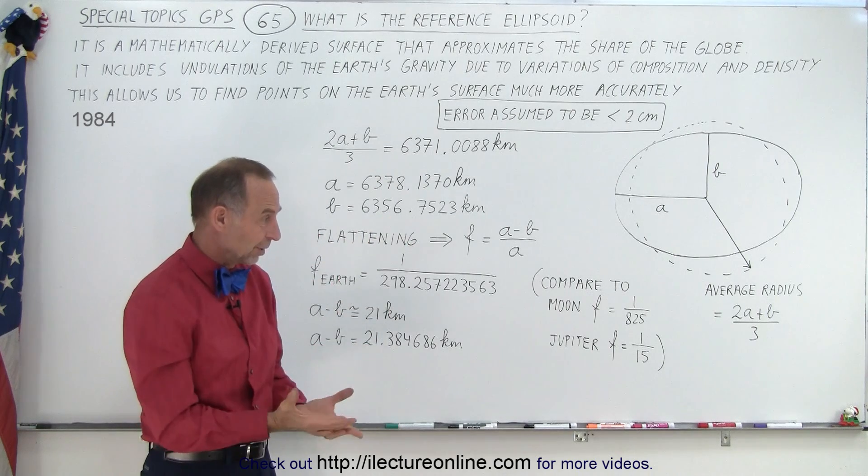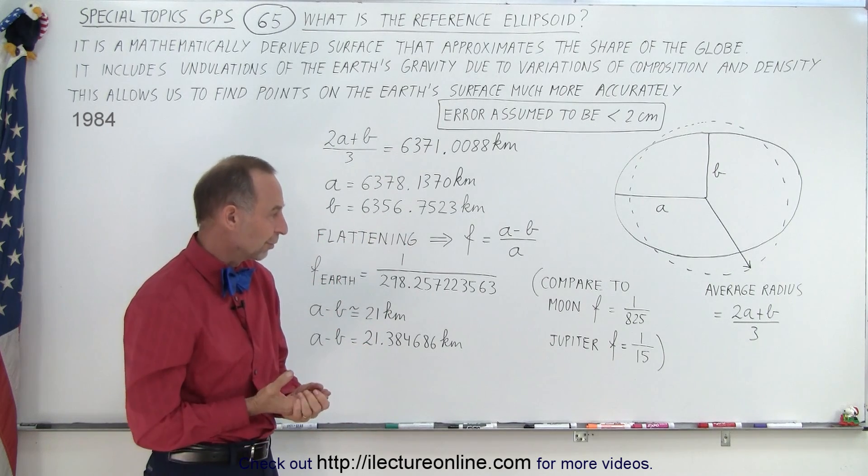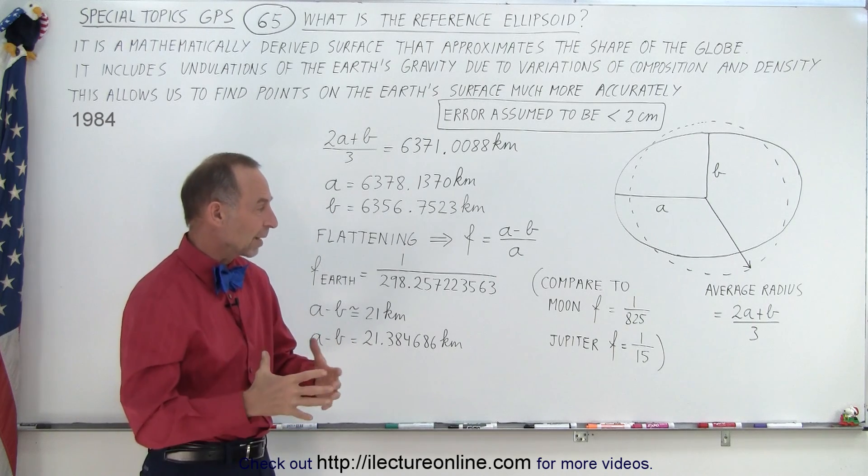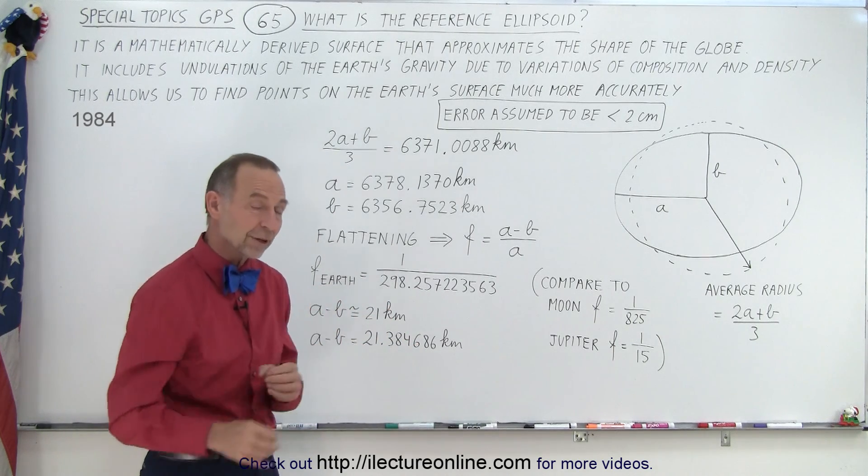And so therefore, it's even more wide than it is tall relative to Jupiter. So gas planets, big planets and gas planets tend to be much more of an ellipsoid compared to smaller objects.